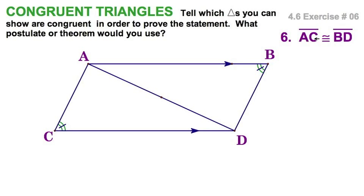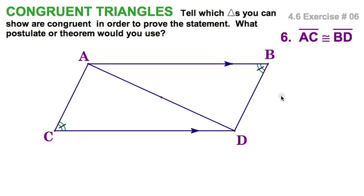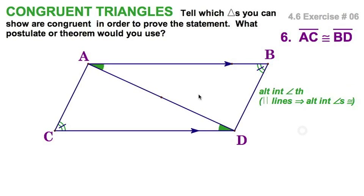Here we go again, proving that these two pieces — AC and BD — are congruent, components of two triangles. We're looking for a pair of congruent triangles — they're staring right at us. We've got these parallel lines; that's a big hint, and this is a transversal. I do have angle B marked congruent to angle C. These two green angles are congruent — they're the alternate interior angles. Remember, this is your transversal.